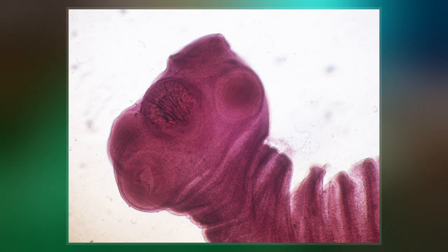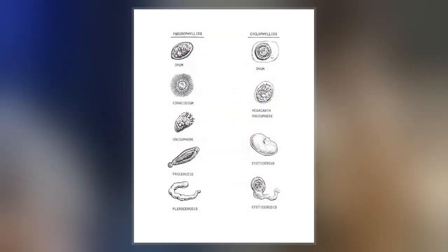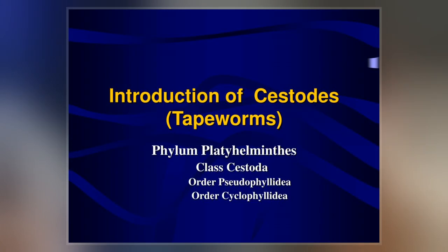For example, Diphyllobothrium has at least two intermediate hosts, a crustacean and then one or more freshwater fish. Its definitive host is a mammal. Some cestodes are host-specific, while others are parasites of a wide variety of hosts.